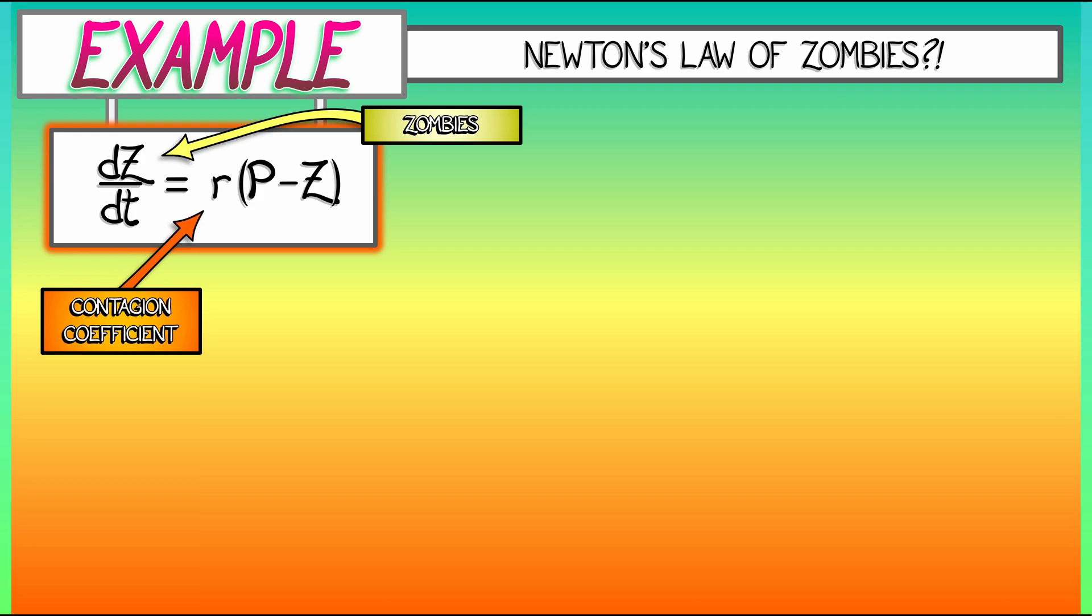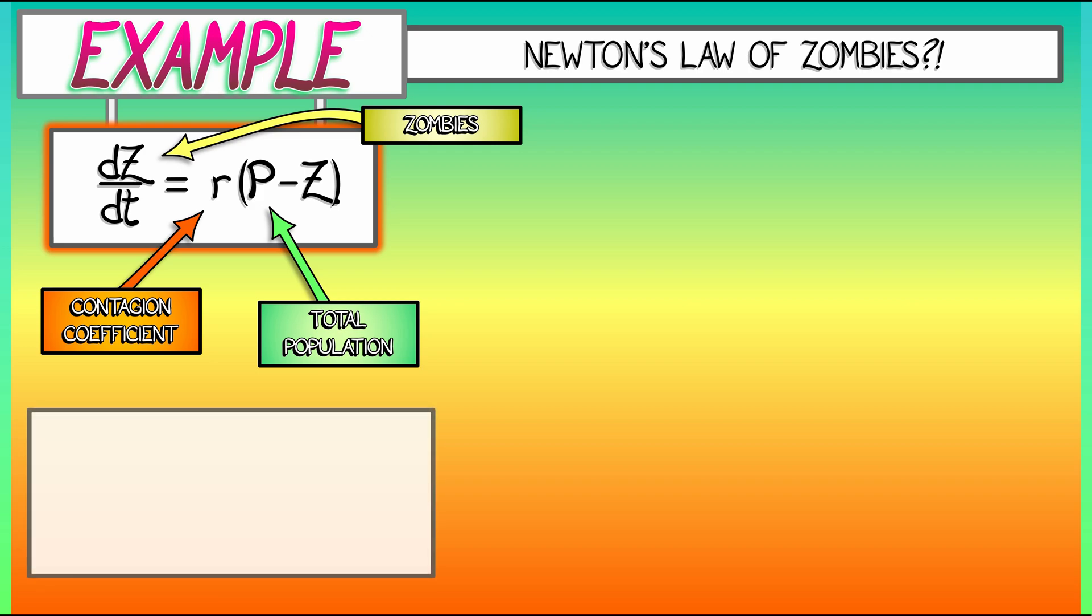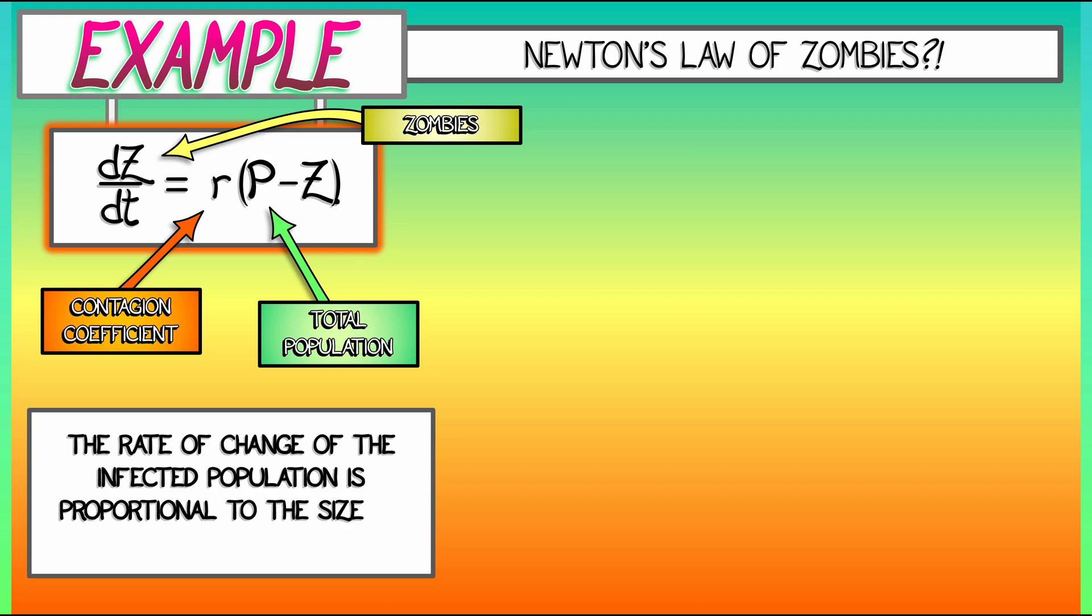How contagious is zombieism? And P is a constant that represents the total population size. This is an infectious disease model. It says that the rate of change of the infected population is proportional to the size of the uninfected population.